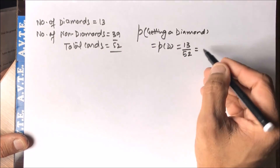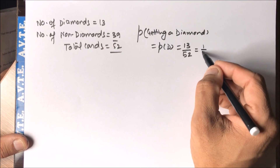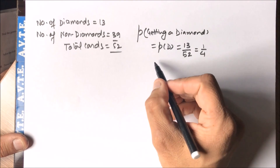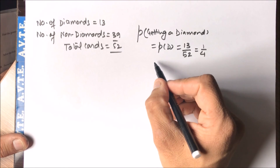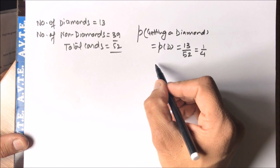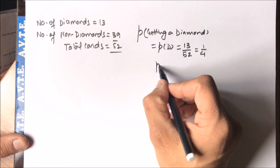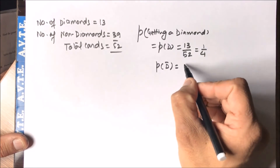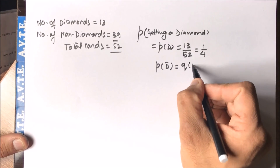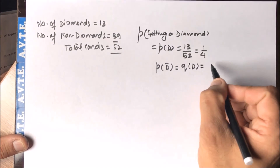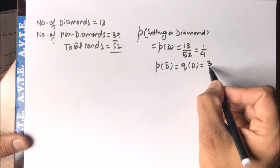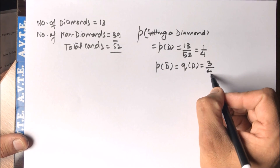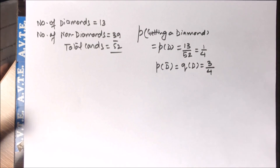Since this is with replacement, we can simplify: probability of a diamond, P(D) = 1/4. And the probability of not getting a diamond, Q(D), is 1 minus 1/4, which is 3/4.